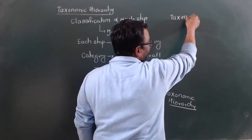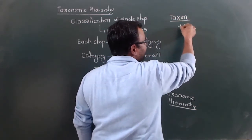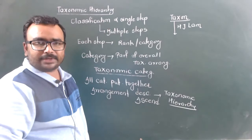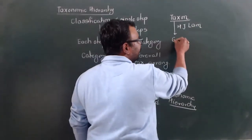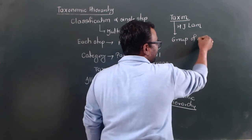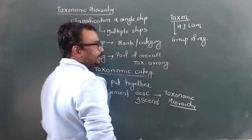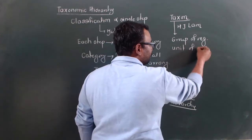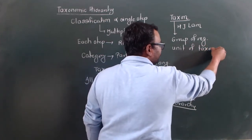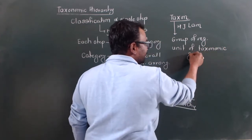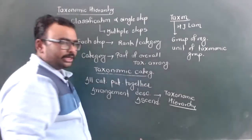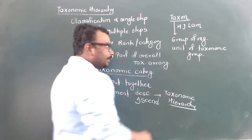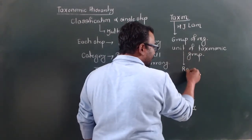The term used again and again is 'taxon.' Taxon is a specific term — it is not the name of a scientist. A taxon refers to a group of organisms, and classification is the grouping of organisms. This particular taxon is considered to be the unit of a taxonomic group.